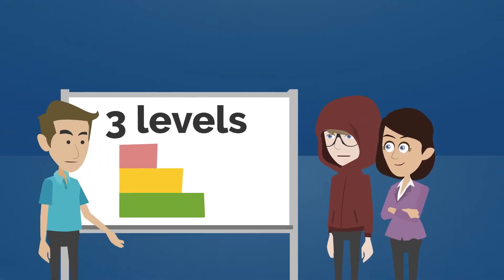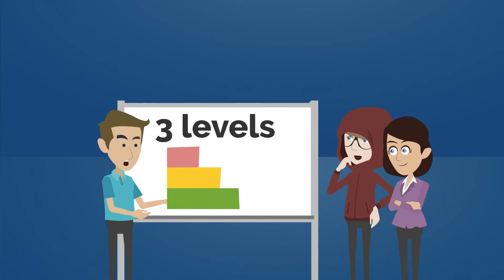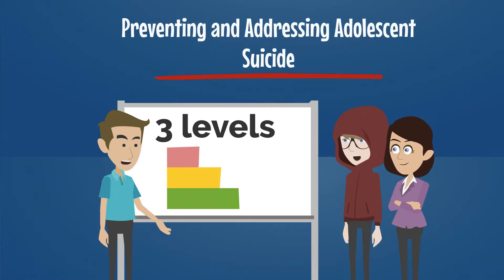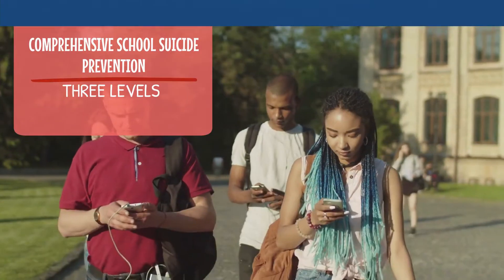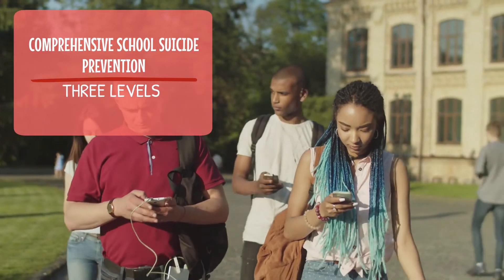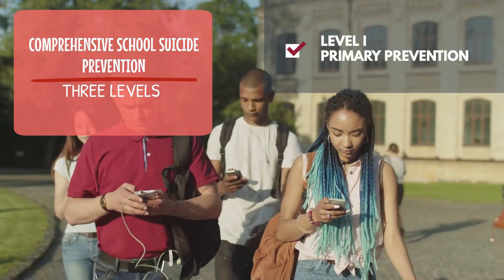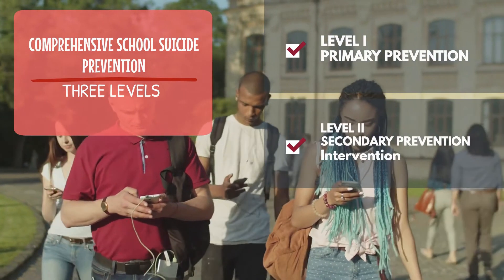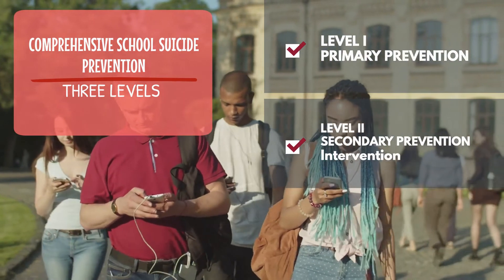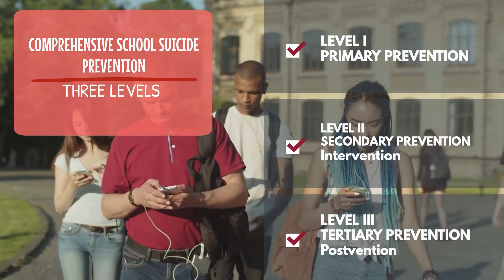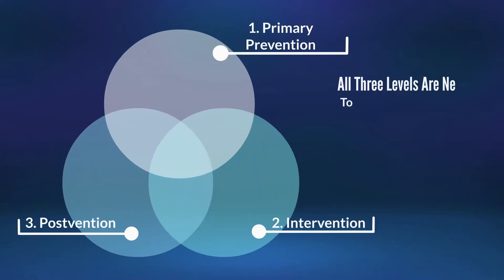Comprehensive School Suicide Prevention describes a set of school-based strategies aimed at preventing and addressing adolescent suicide on multiple levels. Effective Comprehensive School Suicide Prevention consists of three levels: primary prevention, secondary prevention, also called intervention, and tertiary prevention, also called postvention. All three levels are needed to comprehensively address adolescent suicide.